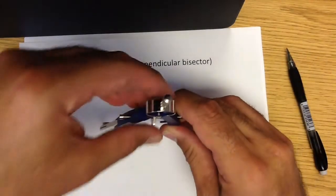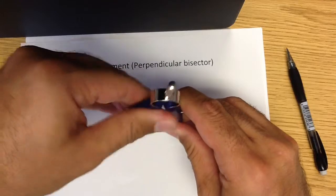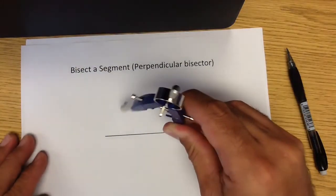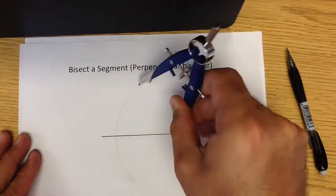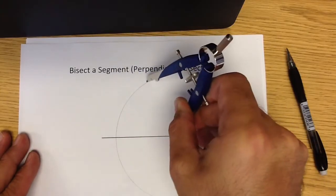So in this case I'm going to open up my compass so that it is about three quarters the length of the line segment that's given and I'm going to draw an arc. So if you look carefully I have an arc drawn.